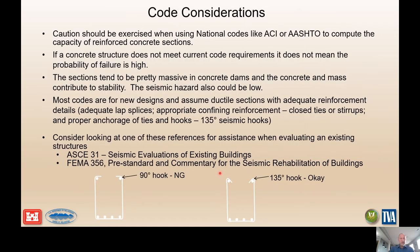Code considerations: caution should be used when using national codes. The detailing needs to be there to get the expected ductile behavior and capacity that you're expecting from computing capacity from code equations. For example, working in the building seismic safety program at Reclamation, every single beam in their power plants has 90-degree hooks in high seismic areas, whereas the code now requires 135-degree hooks. There are references such as ASCE 31 — Seismic Evaluation of Existing Buildings — that can help adjust those capacities for sections that don't meet current code requirements.